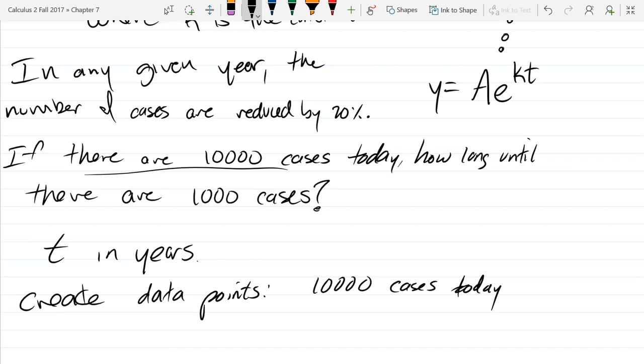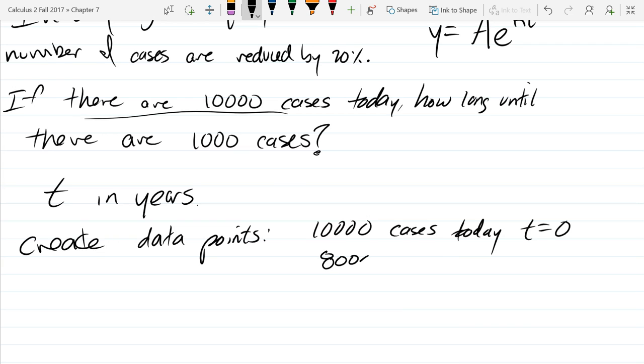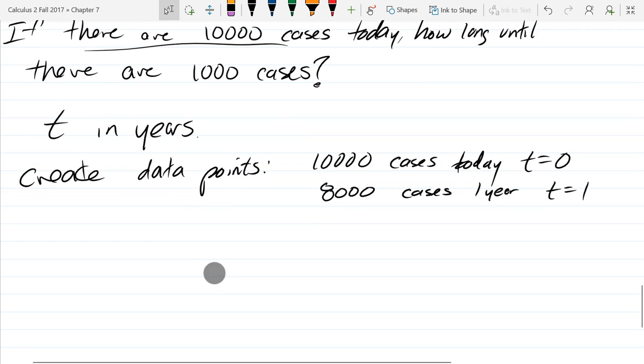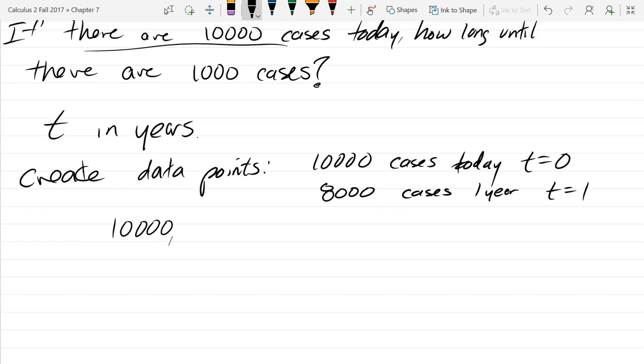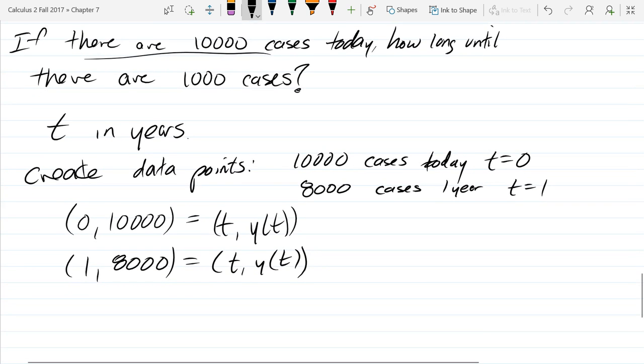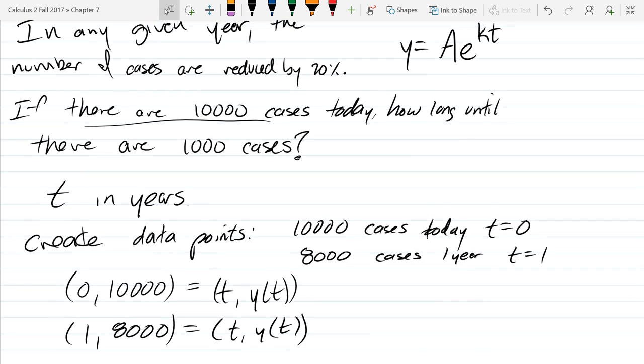Now we count in years. Usually we'll say today, that'll be time zero, so we're starting our timer today. And the 20 percent reduction means 8,000 cases in one year, which is t equals one. So use these two points right here. Our first point is zero comma 10,000—and of course this is t comma y of t. And our second point is one year, 8,000 cases. So use these two data points and this y equals A e to the kt, and figure out what is A and what is k. You should be able to get both of those values.